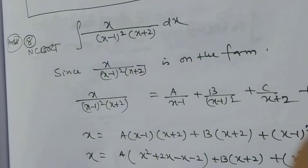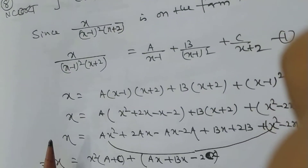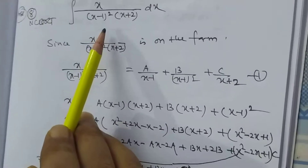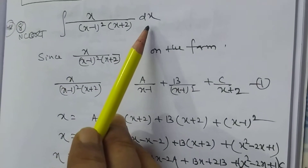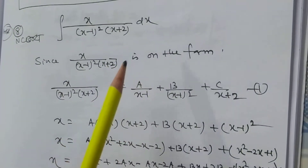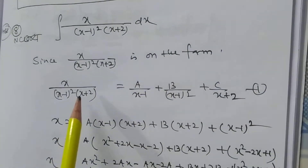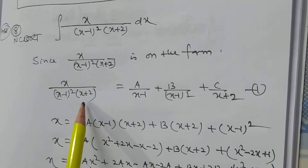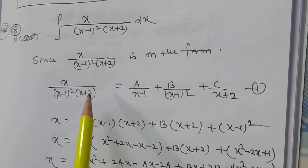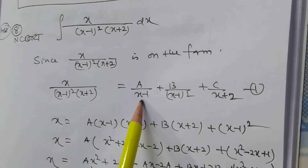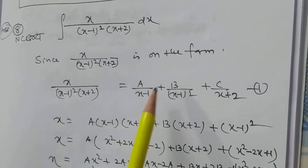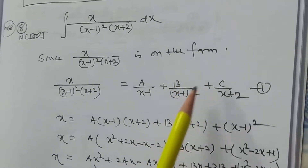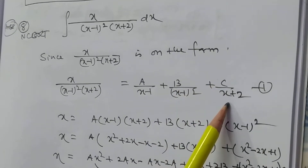Now I want to solve problem number 8: ∫x/[(x - 1)²(x + 2)] dx. It is of the form a/[(x - 1)²(x + 2)], so it is written as a/(x - 1) + b/(x - 1)² + c/(x + 2).